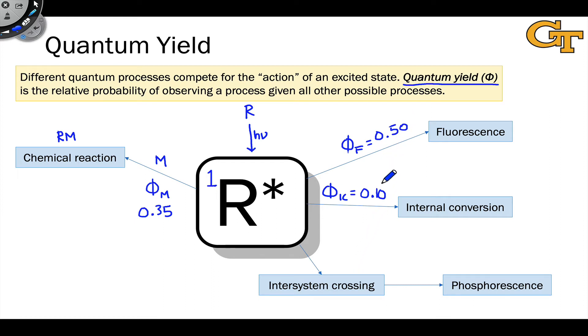And based on the rules of probability, if these are the only four things that can happen, 0.35 plus 0.1 plus 0.5, that's 0.95. So the quantum yield of inter-system crossing, ISC, must be 0.05.